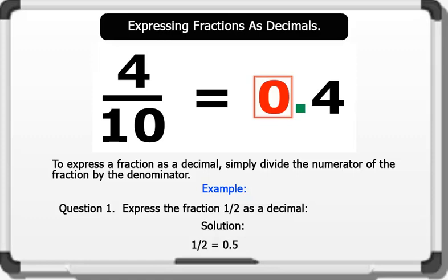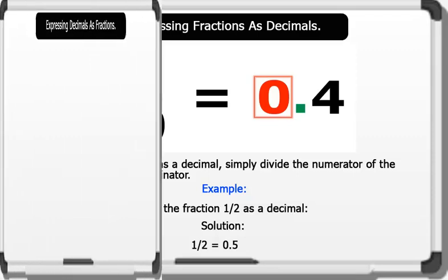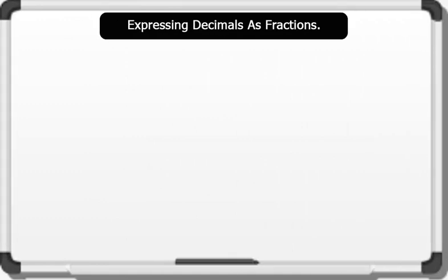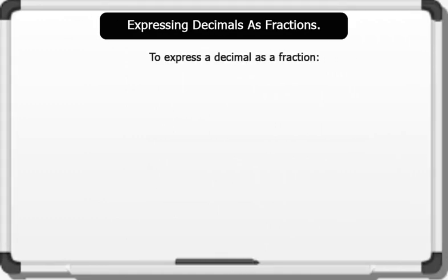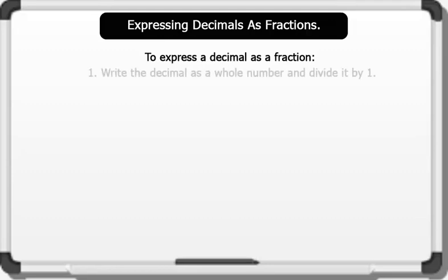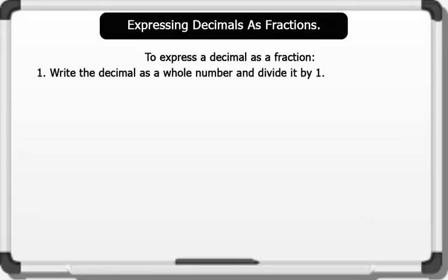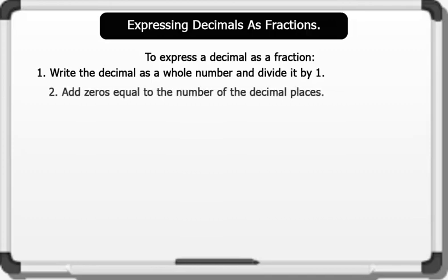That's awesome! Now let's express decimals as fractions. To express a decimal as a fraction: 1. Write the decimal as a whole number and divide it by 1. 2. Add zeros equal to the number of decimal places.